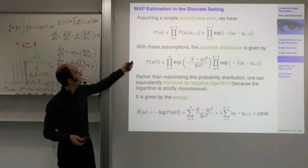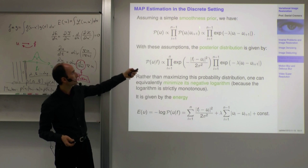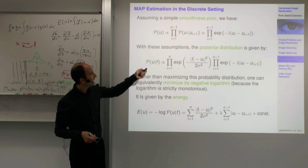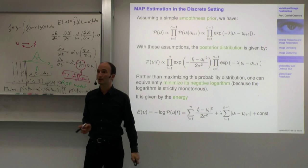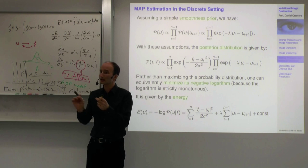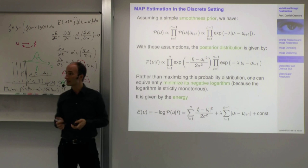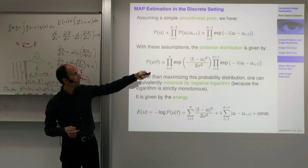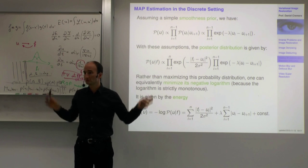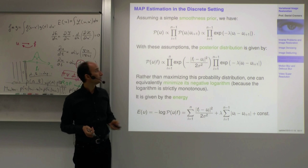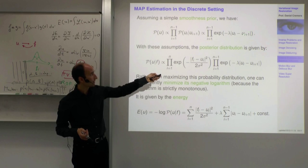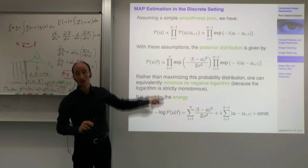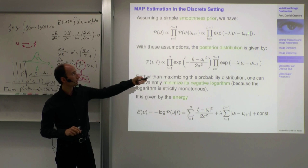A simple smoothness prior says: P(U_i|U_{i+1}) is large if U_i is the same as its neighbor. We favor this in an exponential way: e^{-λ|U_i - U_{i+1}|}. The stronger the difference between neighbors, the less likely. You could also consider a quadratic term instead.